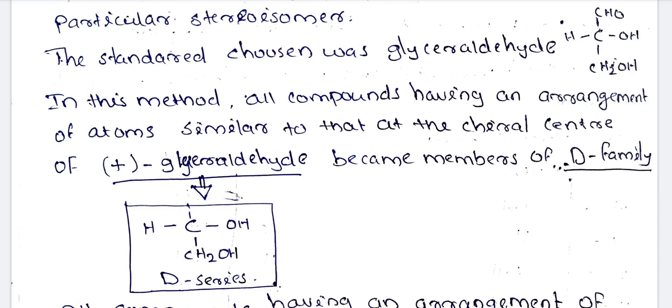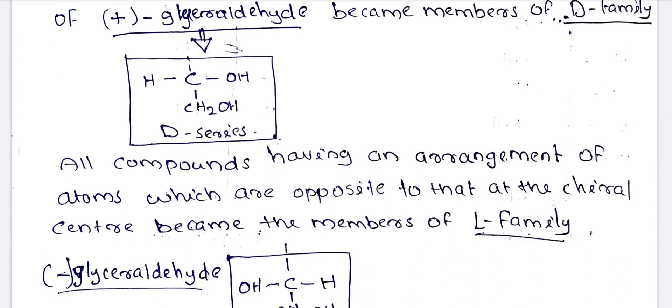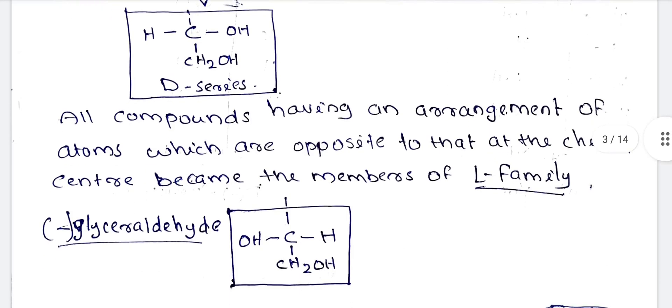In this configuration, we move to the right side — this is the D family. All the compounds having an arrangement of atoms opposite to that of the chiral center become members of the L family. In glyceraldehyde, OH is on the right side for D-series, and on the left side for the L-series.